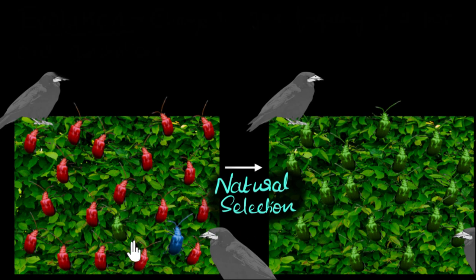Natural selection is a process in which if there is a trait which has an advantage, meaning higher chances of survival, then automatically it gets more passed on because more chances of reproducing, and over generation, its number can start increasing.